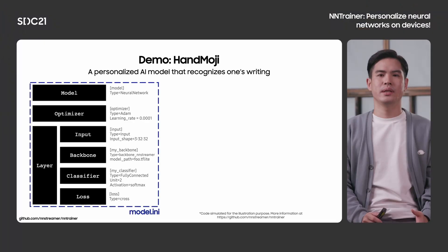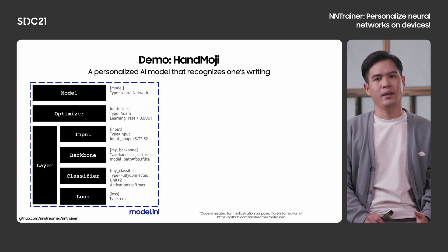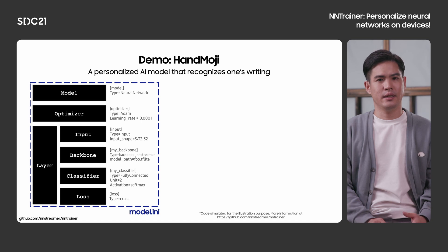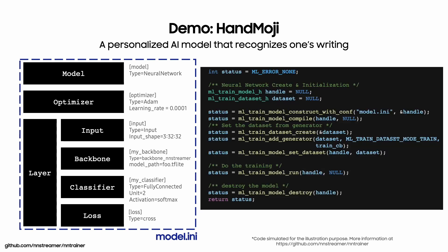This Handmoji example contains human-readable model descriptions in INI, which contains optimizers, layers, and loads as well. In the INI, we define a model section with type neural network, and we also define sections for optimizers, backbones with TFLite, and classifiers with a single fully connected layer. After the model description is ready, the demo uses Tizen's C API to construct and load the model from the INI file, then add a dataset and run.